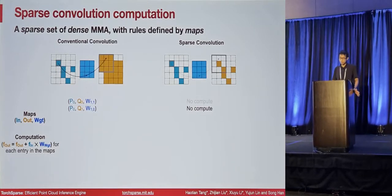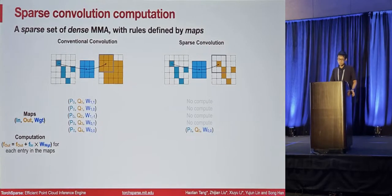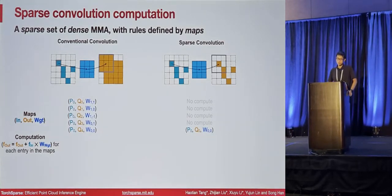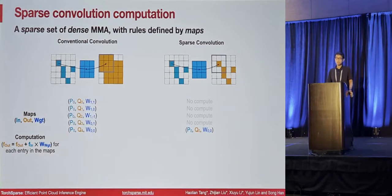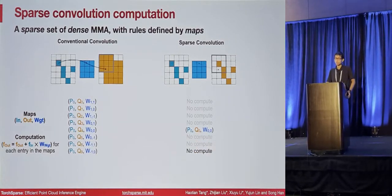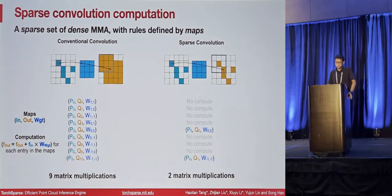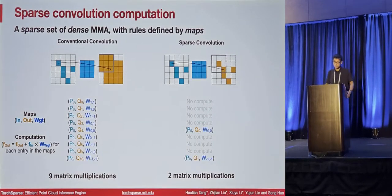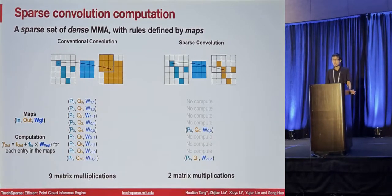If we compare the computation flow of sparse convolution and dense convolution, we find that for the first four positions there are no computations for sparse convolution, but there are always dense matrix multiplications for conventional convolution. For the fifth position, because both input and output are activated for sparse convolution, we do have matrix multiplication on both sides. For the subsequent three positions, no computation for sparse convolution but still dense multiplication for conventional. In total, there are nine matrix multiplications for conventional convolution but only two computations for sparse convolution.